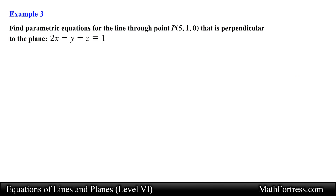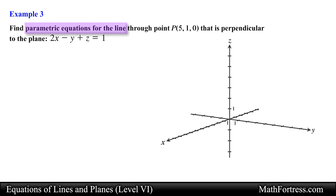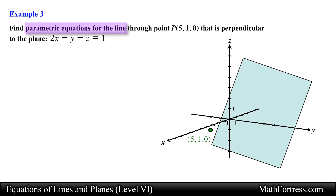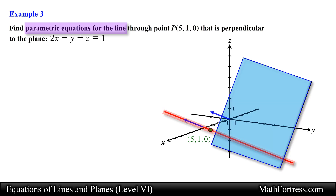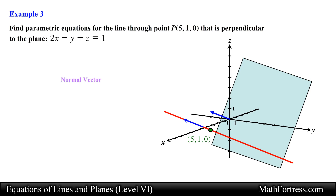Let's take a look at the next example. Find parametric equations for the line through point P that is perpendicular to the plane. In this problem we are given the coordinates of point P and a scalar equation of a plane. We need the parametric equations of a line that passes through point P and is perpendicular to the plane. Notice that if the line is perpendicular to the plane, then any vector normal to the plane will be parallel to the line, so we just need to determine the normal vector to the plane.